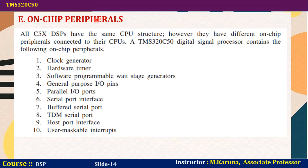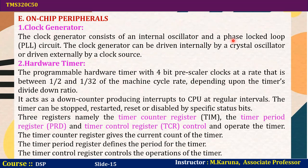The on-chip peripherals of TMS320C50 include: clock generator, hardware timer, software programmable wait state generator, general purpose I/O pins, parallel I/O port, serial port interface, buffered serial port, TDM serial port, host port interface, and user maskable interrupts. The clock generator consists of an internal oscillator and phase-locked loop circuit that can be driven internally by a crystal oscillator or externally by a clock source.